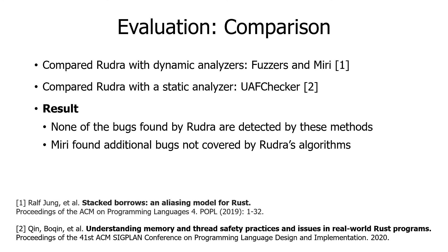As the next step, we compared Rudra with existing approaches. First, we compared Rudra with dynamic analyzers, fuzzers, and Miri. Fuzzers test programs with randomly mutated inputs to detect bugs. Miri interprets Rust mid-level IR and can detect certain classes of undefined behaviors during the interpretation. We also compared Rudra with a static analyzer named UnsafeCty Checker from PLDI 2020. The result shows that none of the bugs found by Rudra are detected by these methods. This indicates that Rudra can find unique bugs. During the evaluation, Miri found additional bugs that are not covered by Rudra's algorithm, indicating that Miri and Rudra are complementary to each other.